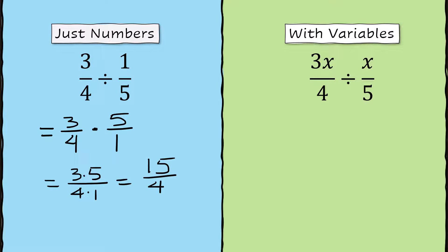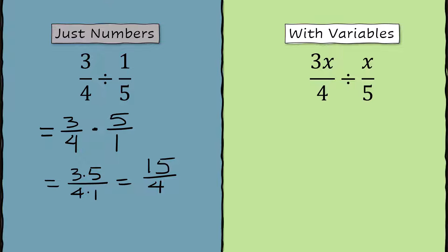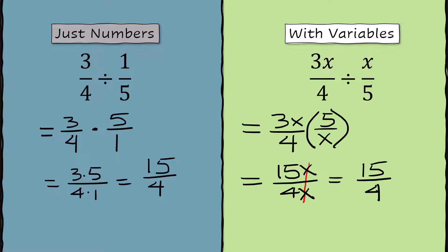With variables it seems more complicated, but you do the exact same thing. So 3x over 4 stays the same. Instead of dividing by x over 5, we're going to multiply by 5 over x. 3x times 5 is 15x, and 4 times x is 4x. In this situation, the x on the top and the bottom will cancel. So the answer is 15 over 4.